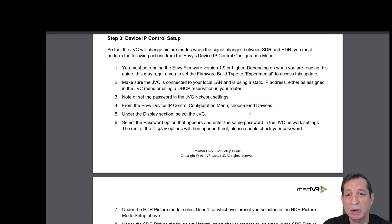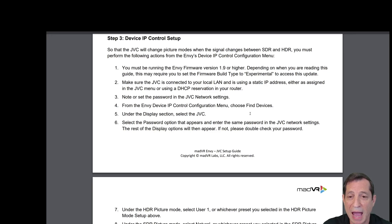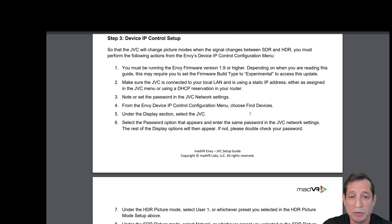For Step 3, we have our Device IP Controls set up. So that the JVC will change picture modes when the signal changes between SDR and HDR, you must perform the actions listed below from the Envy's Device IP Control Configuration menu. We're not going to cover those details here; however, if you see our lesson on controlling IP devices with the Envy in the Advanced section of these lessons, we'll walk you through how to do that there.